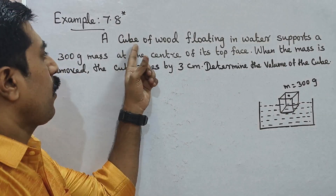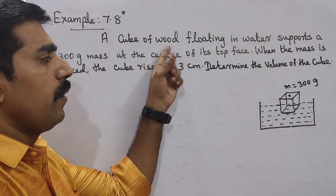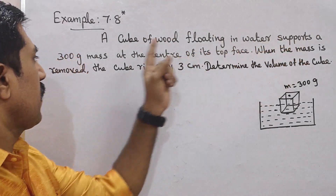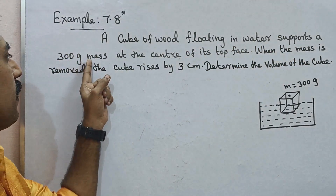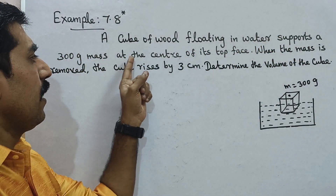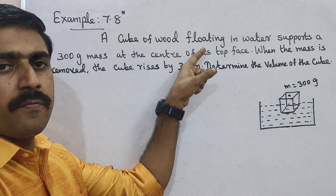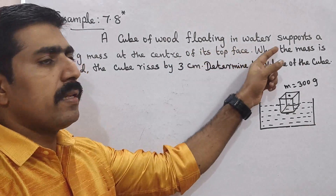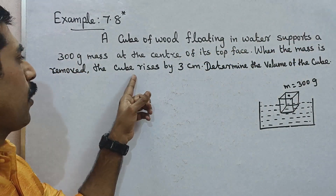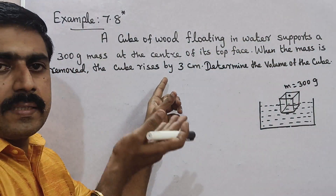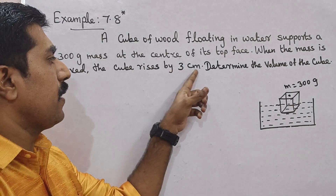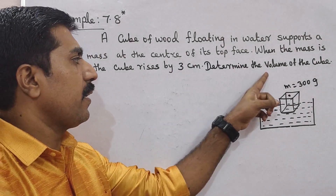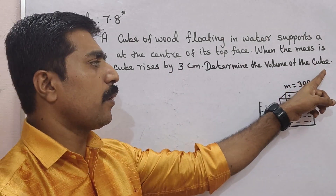A cube of wood floating in water supports a 300 gram mass at the center of its top face. When the mass is removed, the cube rises by 3 cm. Determine the volume of the cube.